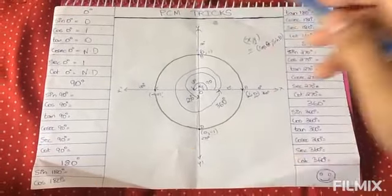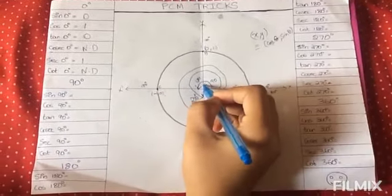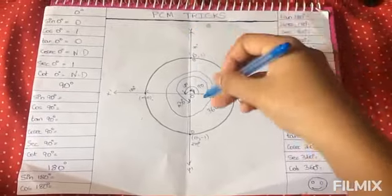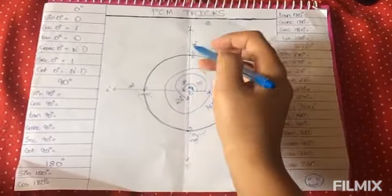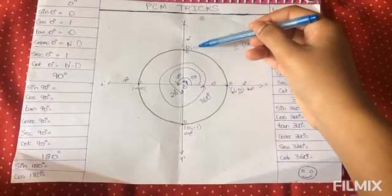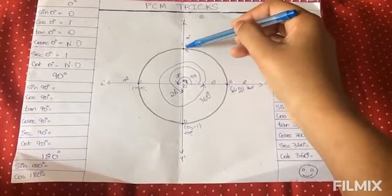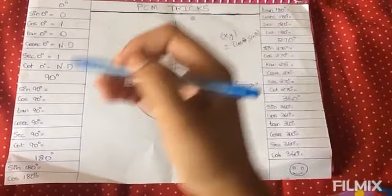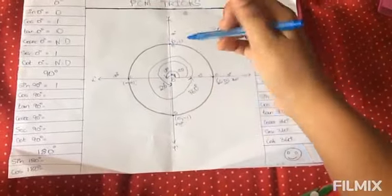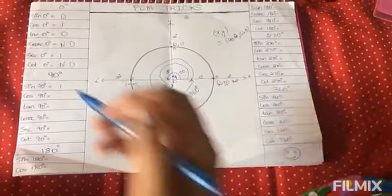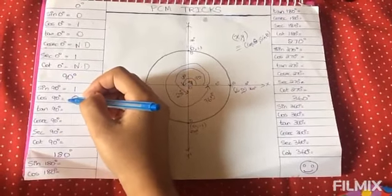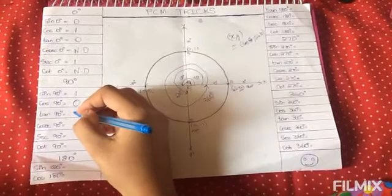Next, let's calculate the value of trigonometric ratios with respect to angle 90 degree. The angle between the positive x-axis and positive y-axis is 90 degree. So we have to find the values at point B. Sin 90 degree is the same as the value of ordinate along positive y-axis at B, which is 1. Therefore, sin 90 degree is also 1. Cos 90 degree is the value of abscissa at point B, which is 0. Therefore, cos 90 degree is 0. Tan 90 degree is sin 90 by cos 90, which is 1 by 0 — it is not defined.